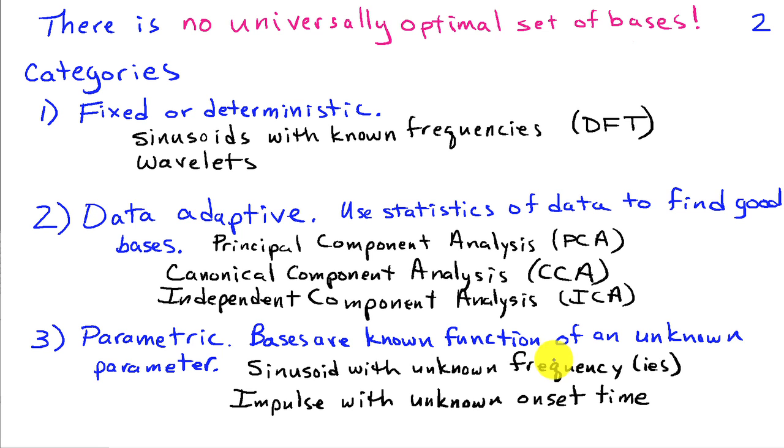So, for example, if we know that we want to use a sinusoid as a basis signal, but we don't know what the right frequency is, that would be a parametric basis, because I know the shape of the basis is a sinusoid. I just don't know what the frequency should be. So the frequency is an unknown parameter that describes the basis.